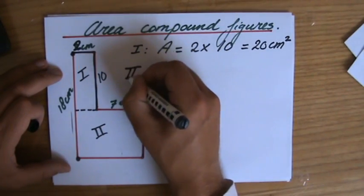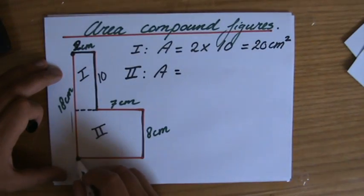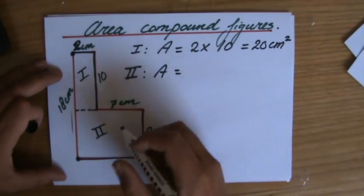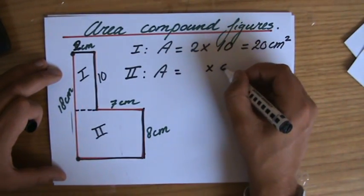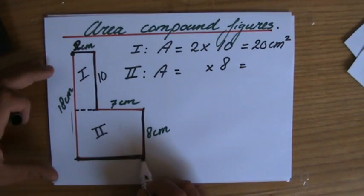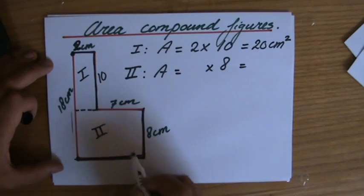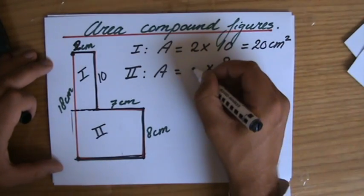And do the same for number two. What is the area? That is the length of this one times that one. Well, that one I can see—that is eight. Let me put there eight. But what about this one? It doesn't show, so you've got to find it. It's seven plus two: nine.